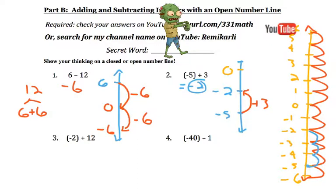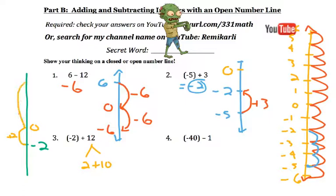For number 3, it says negative 2 plus 12. So for this one, again, I'm going to do an open number line. And we're starting at negative 2, and the addition means we're going up. And since we're going up 12, I know that we're going to pass 0, and this answer should be positive. So first, I'm just going to go up to 0. And then it's like we broke the 12 up into a 2, and then we have a 10 left over. So now I'm going to go up by 10. And that gets us to positive 10. So this answer should be 10.